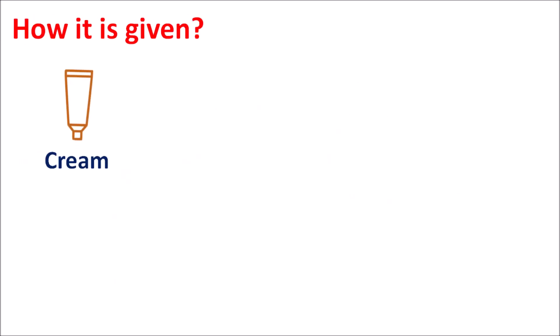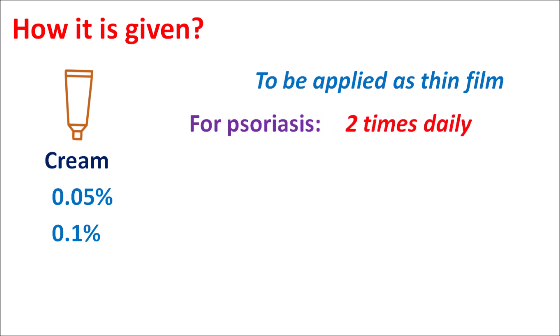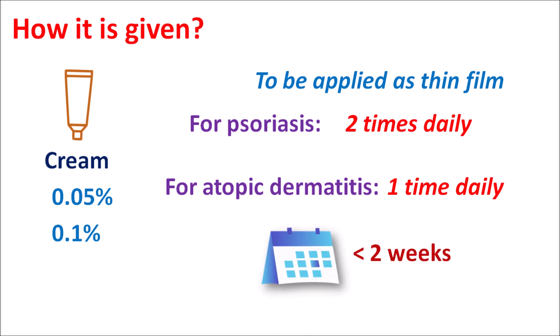This drug is available as a cream at a strength of 0.05% as well as 0.1%, and should be applied as a thin film to maintain a low dose on the skin. For the treatment of psoriasis, this cream should be applied twice daily to produce an efficient response. For atopic dermatitis, it should be applied once daily. The duration of treatment should be less than 2 weeks to avoid suppression of the HPA axis.